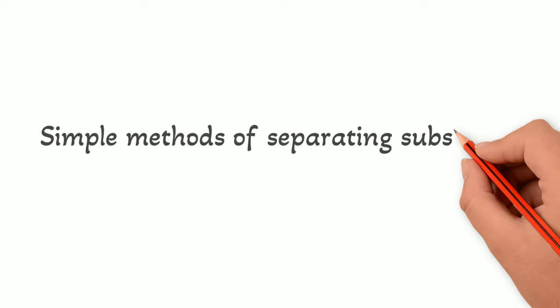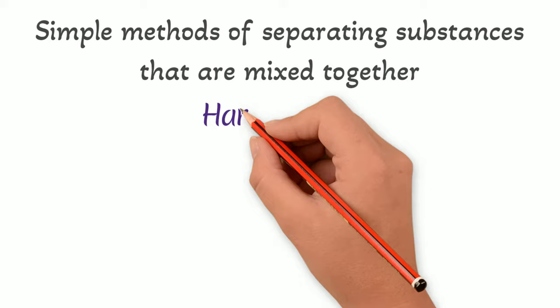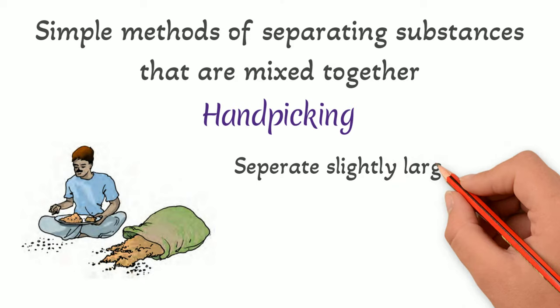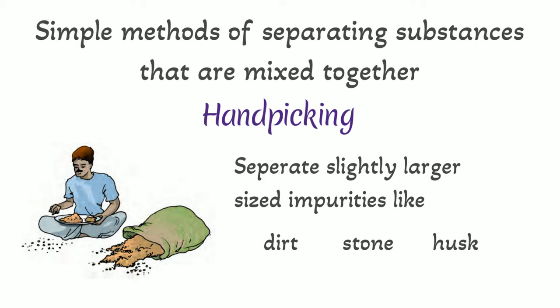First of all, handpicking. Handpicking can be used for separating slightly larger size impurities like pieces of dirt, stone, and husk from wheat, rice, or pulses.